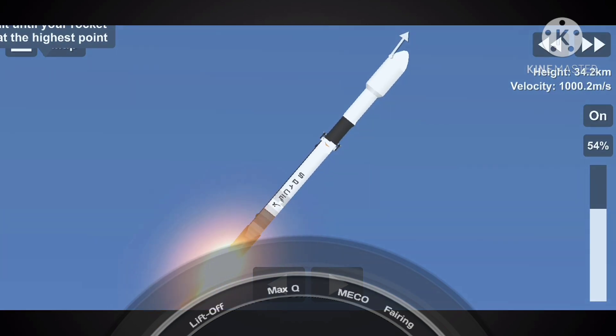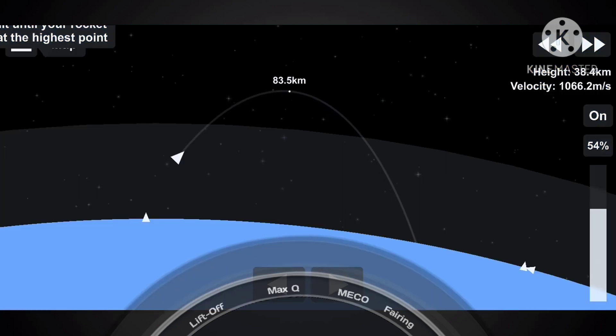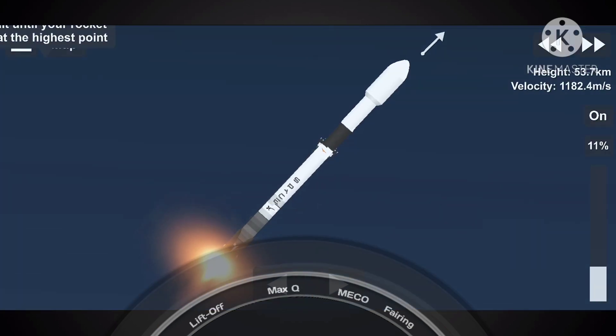After stage separation is SES-1, or second engine start one, where the MVac engine lights up for its first burn and propels the second stage along with the Starlink satellites to orbit. At T plus two minutes, we are about 30 seconds away from those three events. It's SES-1 because we do have two burns of the Merlin vacuum engine on today's mission.